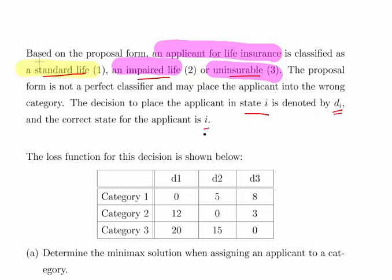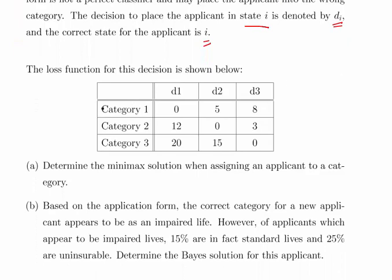This is a loss function for this decision-making process. These are the true states—category 1, 2, and 3—and these are our decisions d1, d2, and d3. If we're making correct decisions, there's no loss function, so you can see there's zero, zero, and zero.